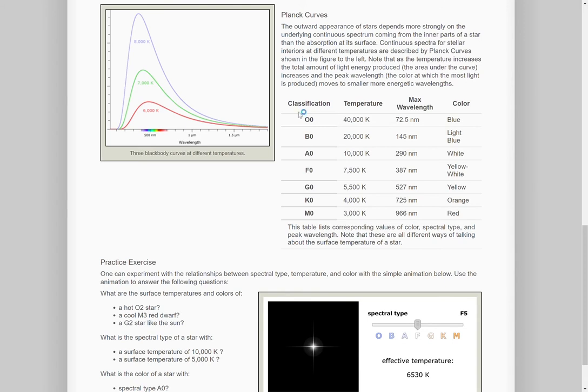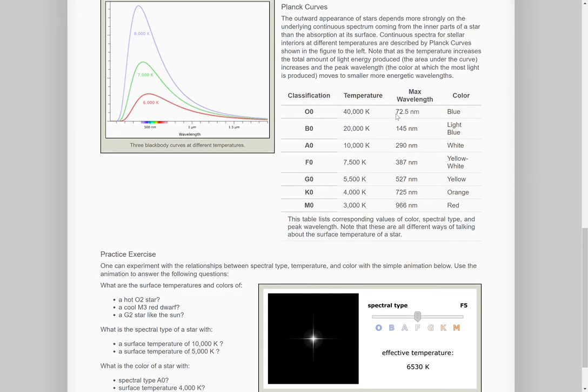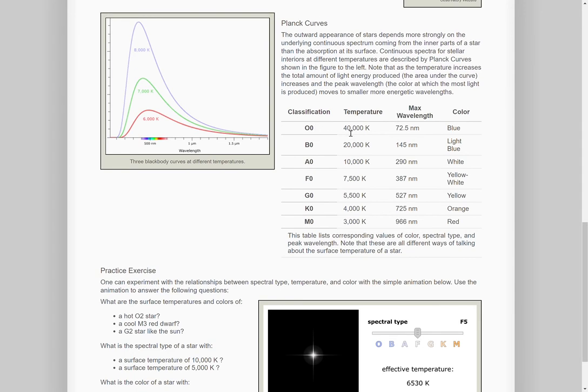So stars that are O-type, and I'll explain in a second why these zeros are here, those are the hottest surface temperatures, 40,000 Kelvin. Peak wavelength, 72.5 nanometers. The actual number value here, not so important, but understanding that this is in the ultraviolet. So a star that has a peak wavelength in the ultraviolet is going to appear blue to us. And that's because we can't see ultraviolet, but the star will be emitting far more blue than any other part of the spectrum.